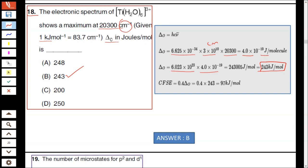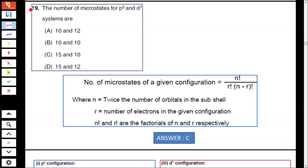Question number 19: The number of microstates for P² and D¹ systems. You have to calculate the microstate. The important formula is N factorial divided by R factorial times (N minus R) factorial, where N is twice the number of orbitals.